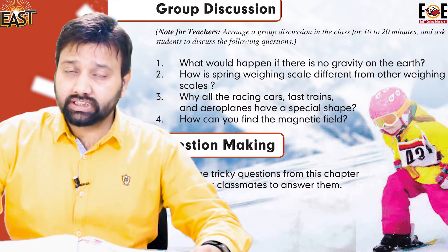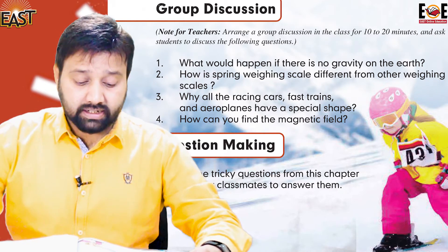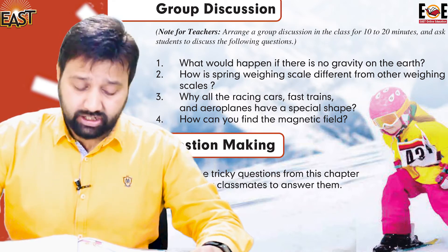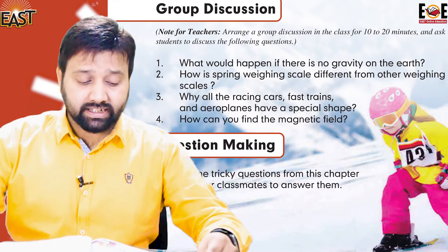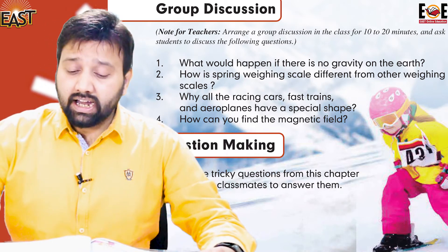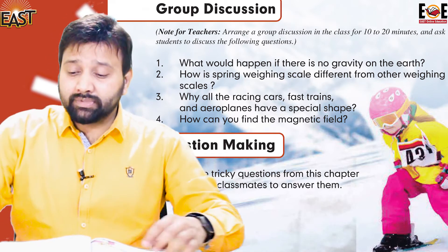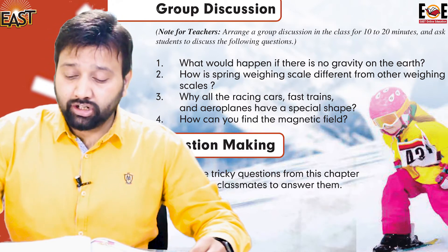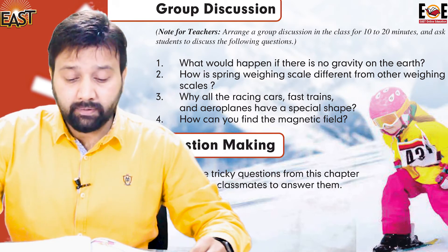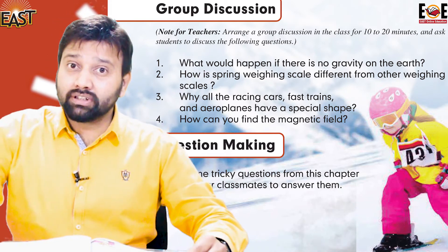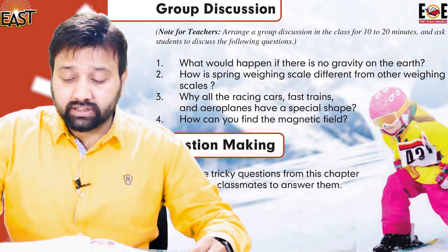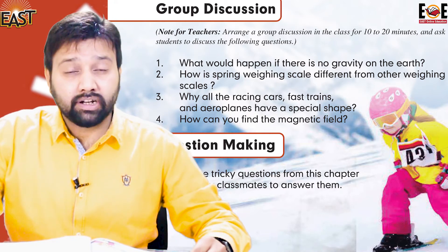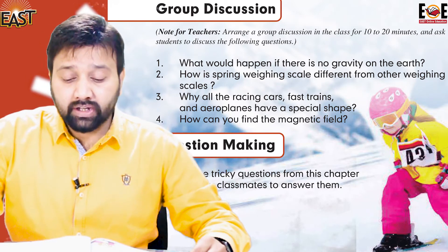Today's first group discussion: What would happen if there is no gravity on the Earth? Kya hoga agar zameen par gravity na ho? Let me discuss the answer. If the Earth's gravity is lost, all the items held to the Earth's surface would float away — that includes the atmosphere, water, people, cars, and animals. Without gravity, the atmosphere of the planet would not exist.